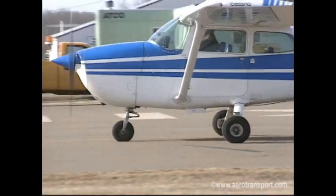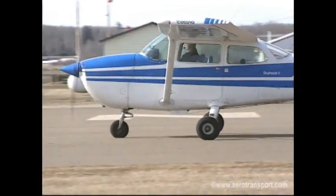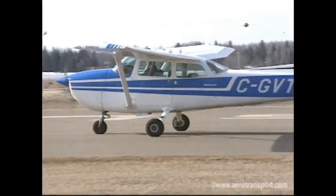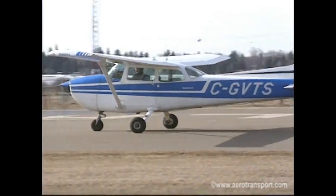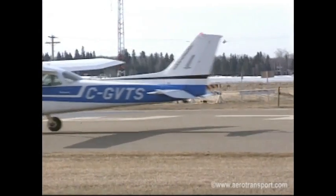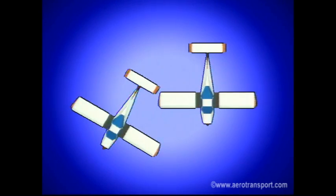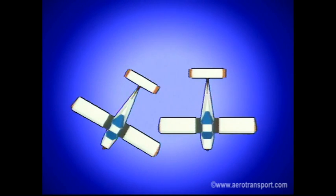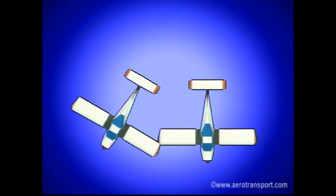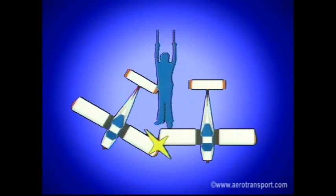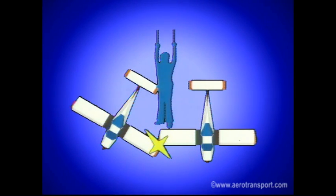When you start to taxi a nose wheel aircraft, first let it roll forward slowly, then center the nose wheel. This will prevent you from sideswiping another aircraft or nearby obstruction. Even very minor collisions on the ground can cause expensive damage to an aircraft.